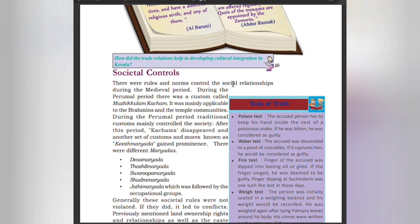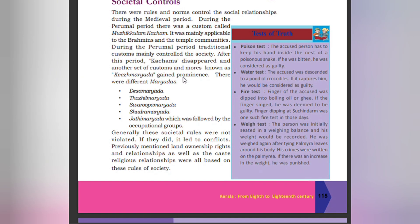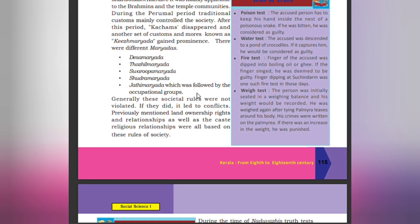There were rules and norms controlling social relationships during the medieval period. During the Perimal period, there was a custom called Murikulam Kacham, mainly applicable to Brahmins and temple communities. After this period, the Kachams disappeared and another set of customs known as Keel Maryada gained prominence. There were different maryadas: Desha Maryada, Todul Maryada, Surubha Maryada, Sudra Maryada, and Jadi Maryada, followed by occupational groups. These societal rules were generally not violated; if violated, it led to conflicts. Previously mentioned land ownership rights as well as caste and religious relationships were all based on these rules of society.